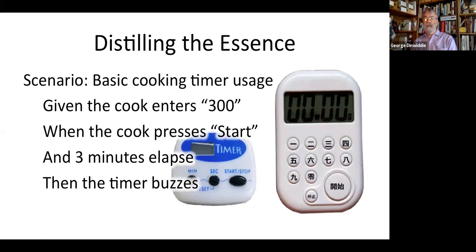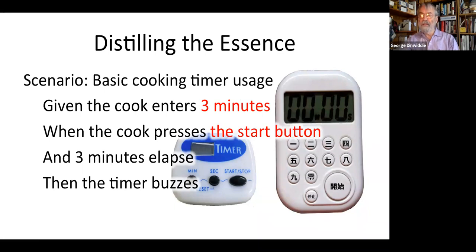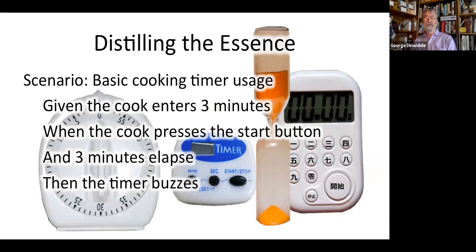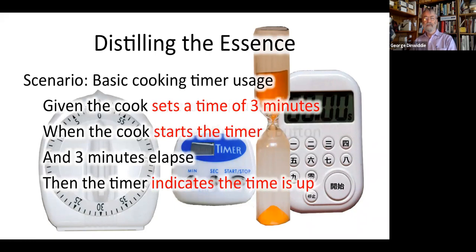What if we had a different timer? There is no 300 on this one that's in Chinese. There's no 300 on this one where there's a minute and a second button. So we might express our intent a little differently. We want to enter three minutes and press the start button. We don't care how we enter three minutes, and we don't care how the start button is labeled. But there are other types of timers too — these don't have any start button, and these don't buzz. So we can generalize this more and come up with a scenario that works for all of these different timers. We can develop a scenario today for what we're building, and as we modify it in the future to add new features, we can still check that it meets the intent of what we're doing today.